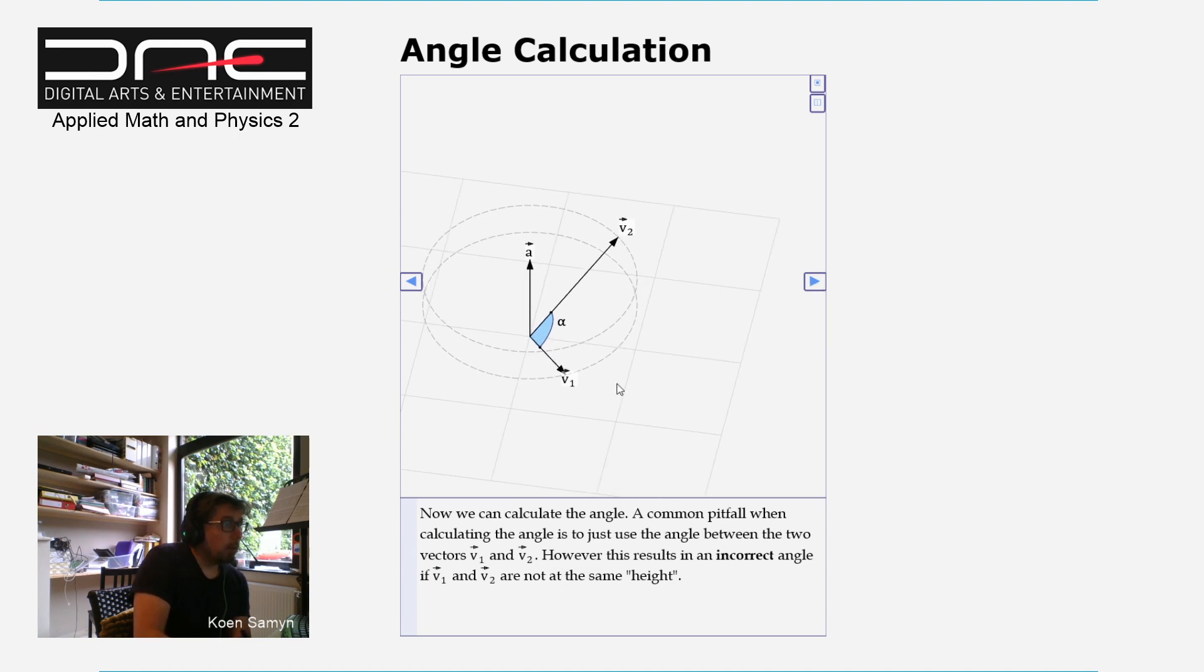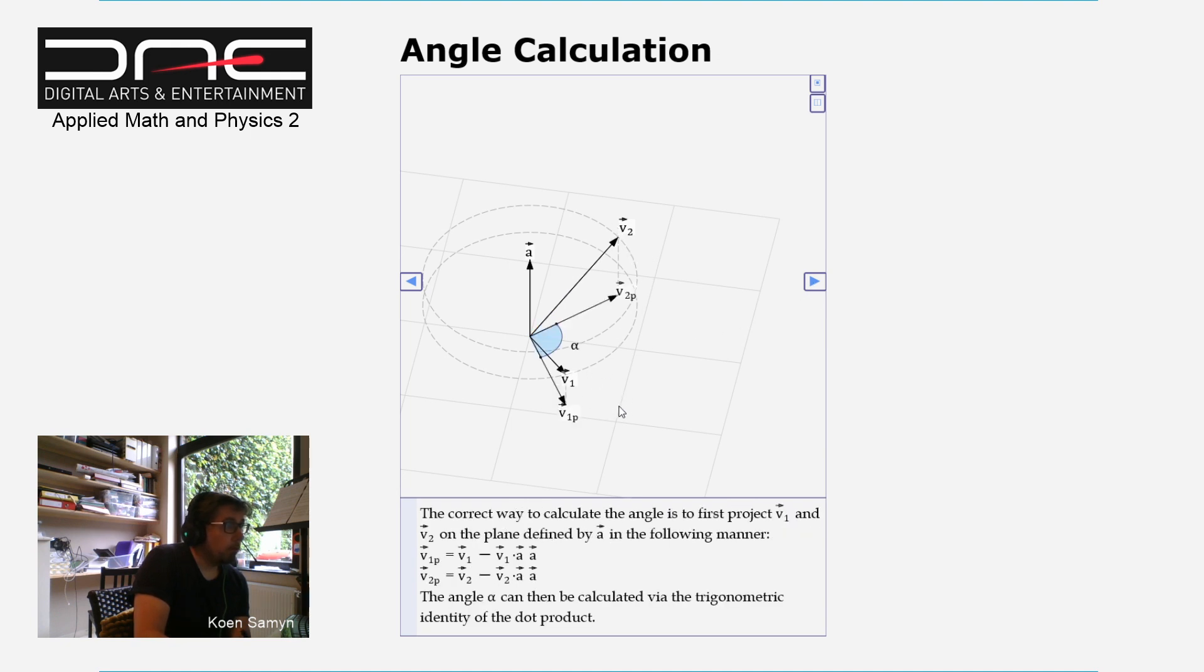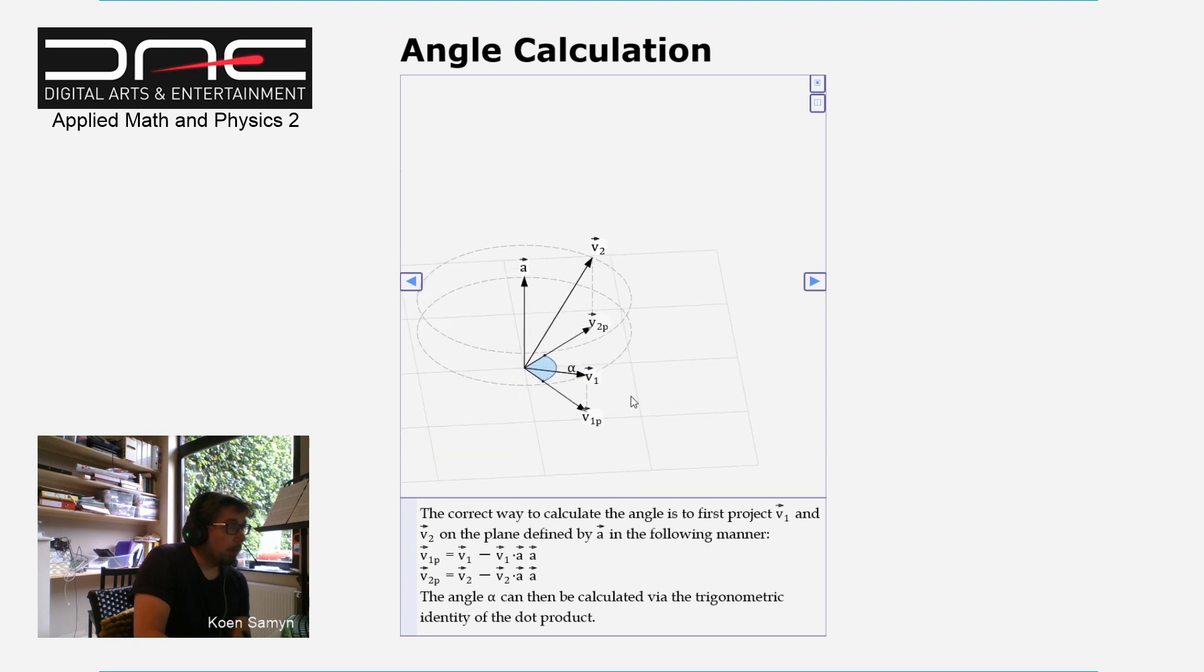You need to project V1 and V2 on the ground plane like so. So how do you do that? You calculate the height relative to the ground plane of the axis of rotation. So this is just the dot product, this is the height.